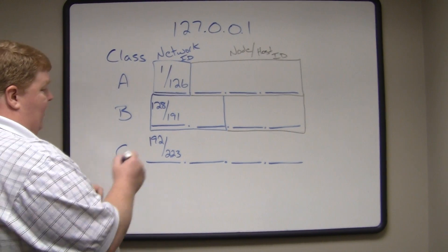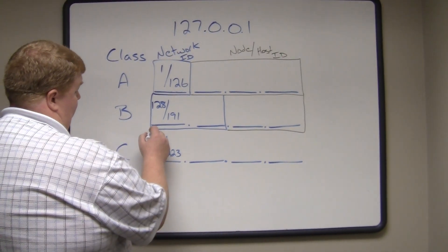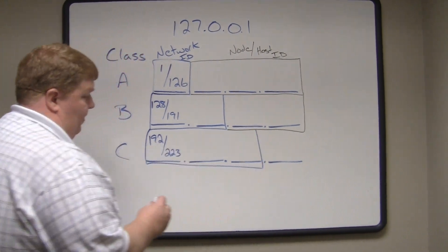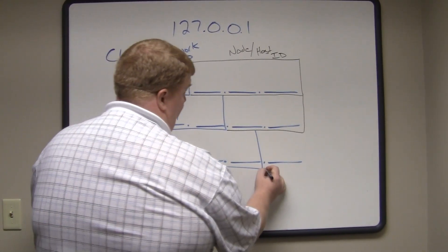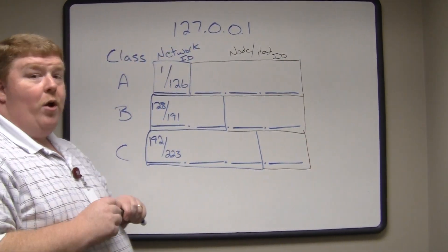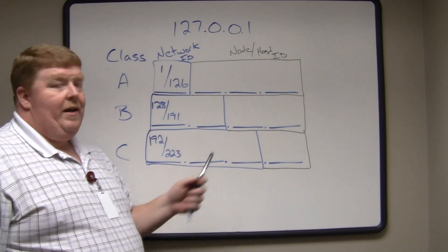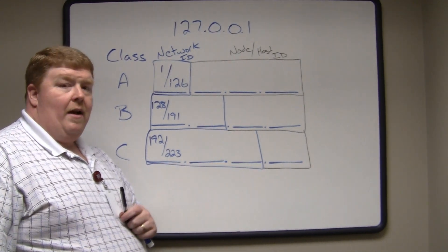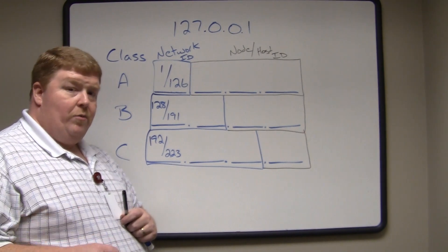With Class C, you may see a pattern here. The first three octets represent the network ID, whereas the fourth octet represents the node. So the first three octets are your area code, and that last single octet represents you as an individual.